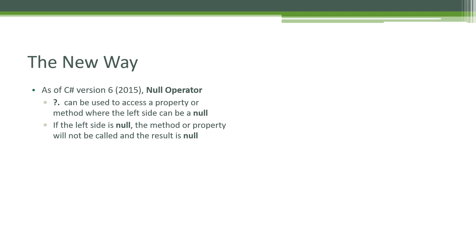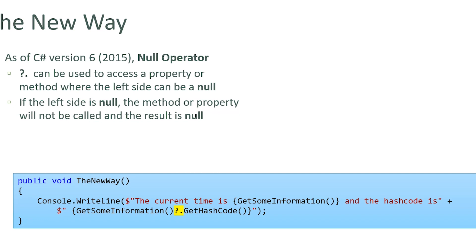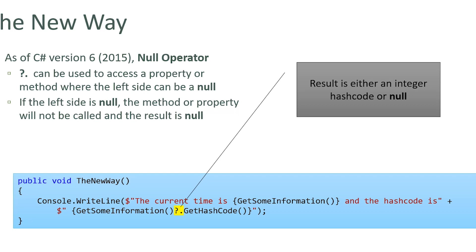The null conditional operator is question mark dot — '?.'. Rather than using just a dot to access a property or method, we use '?.'. If the left side is null, then the result is null. If the left side is not null, then the method or property will be accessed. In this example, we're using '?.' to call GetHashCode. If GetSomeInformation returns null, the '?.' results in null and GetHashCode is not invoked. If GetSomeInformation actually returns a string, then GetHashCode is invoked and what's displayed is the hash code integer value.